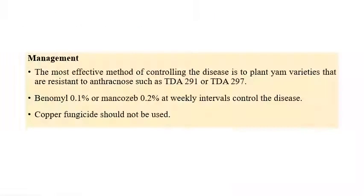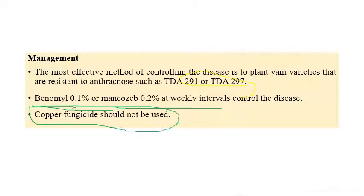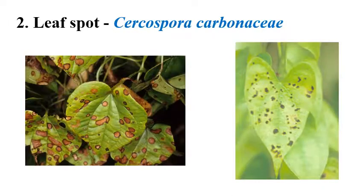Coming to the management of anthracnose, some resistant varieties are available: TDA 291 and TDA 297. We can also go with the application of fungicides like benomyl and mancozeb. One very important point — copper-based fungicides are strictly prohibited here and cannot be recommended.